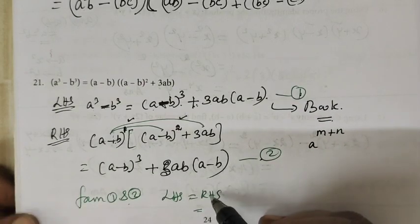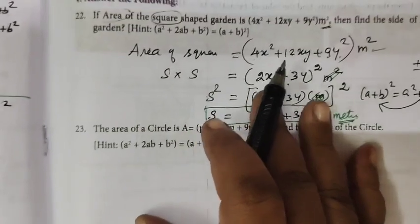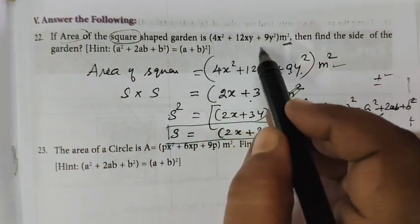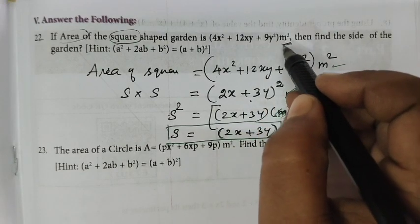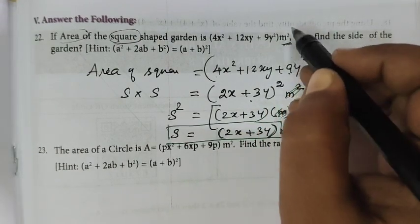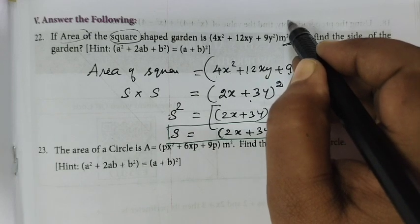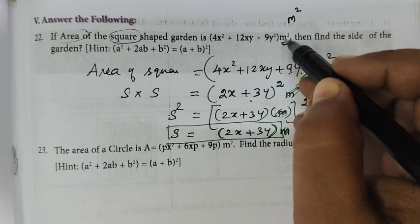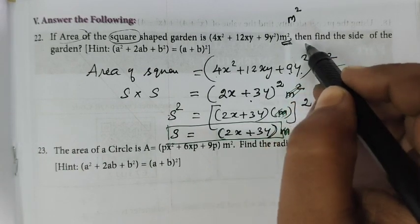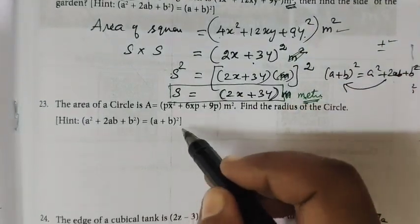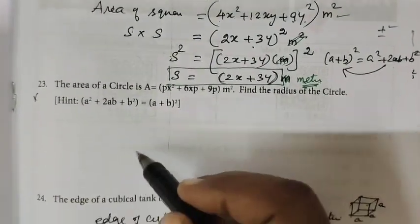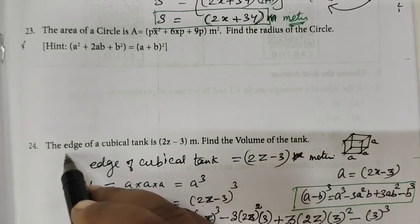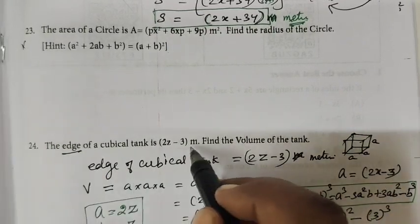LHS is equal to RHS. Now the next question: if the area of the square-shaped garden is given, I am a little confused because the area unit is metre square. Similarly, the edge of the cubical tank — the edge of the cubical tank is in metres.